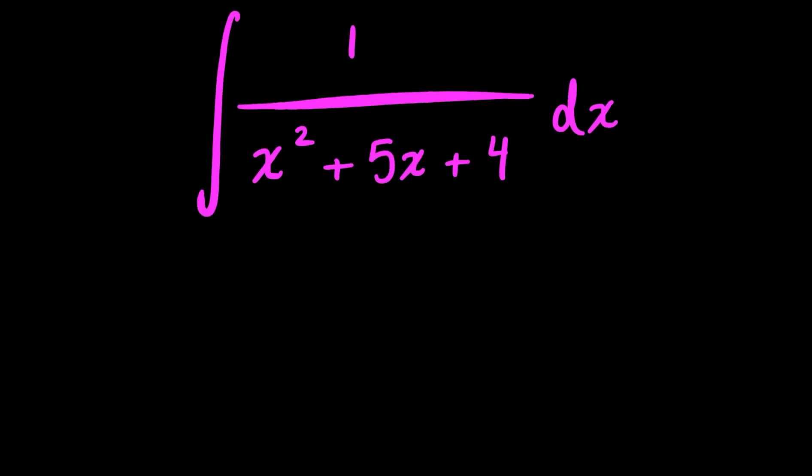So what I'll start by doing is I'll start by factoring out that denominator, and because this is a quadratic, that shouldn't be too difficult. So you just should look for what two numbers have a sum of 5, and at the same time, their product is equal to 4. If you were thinking 4 and 1, then you'd be correct. So I'd have x plus 4 and x plus 1 dx.